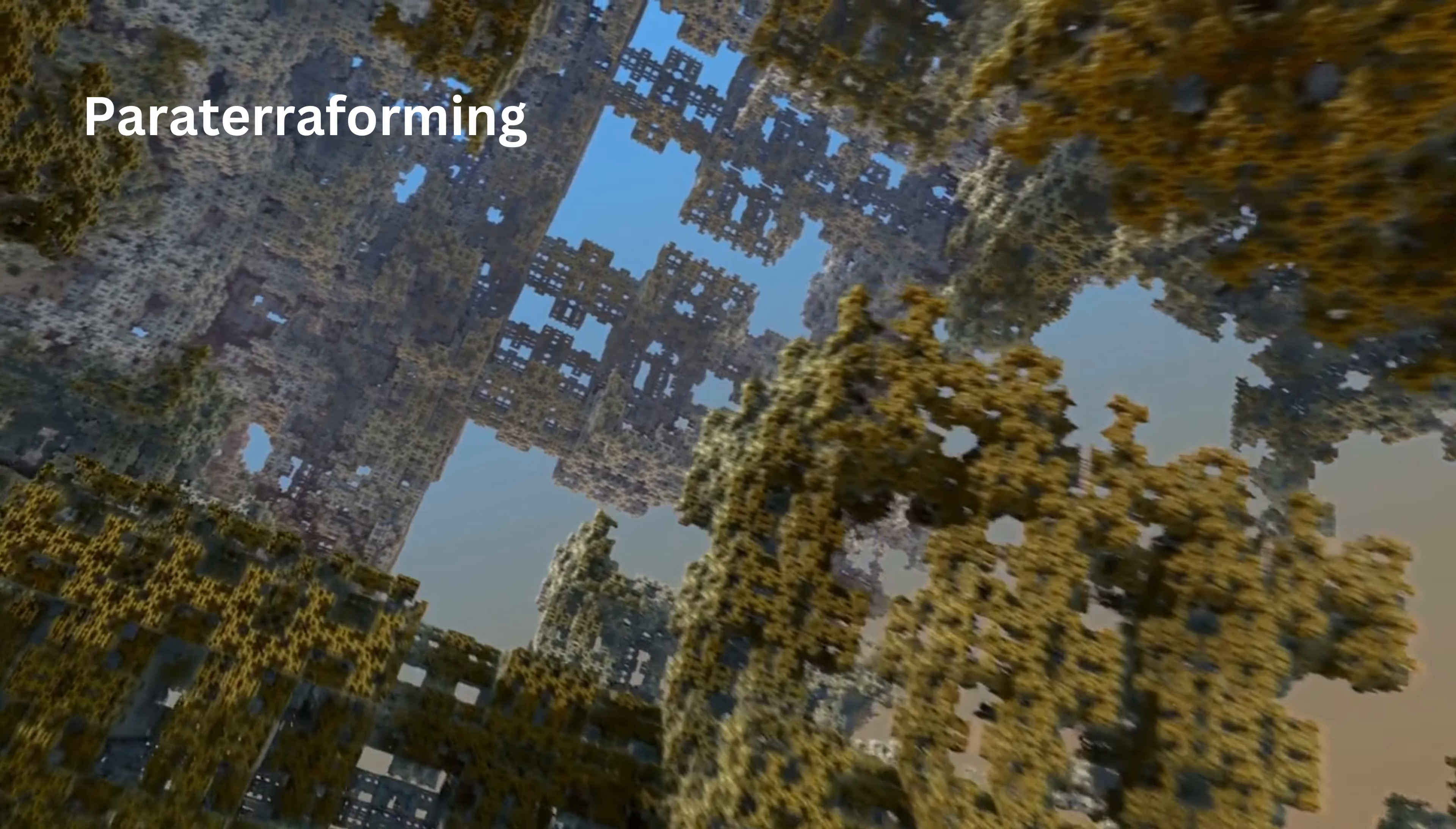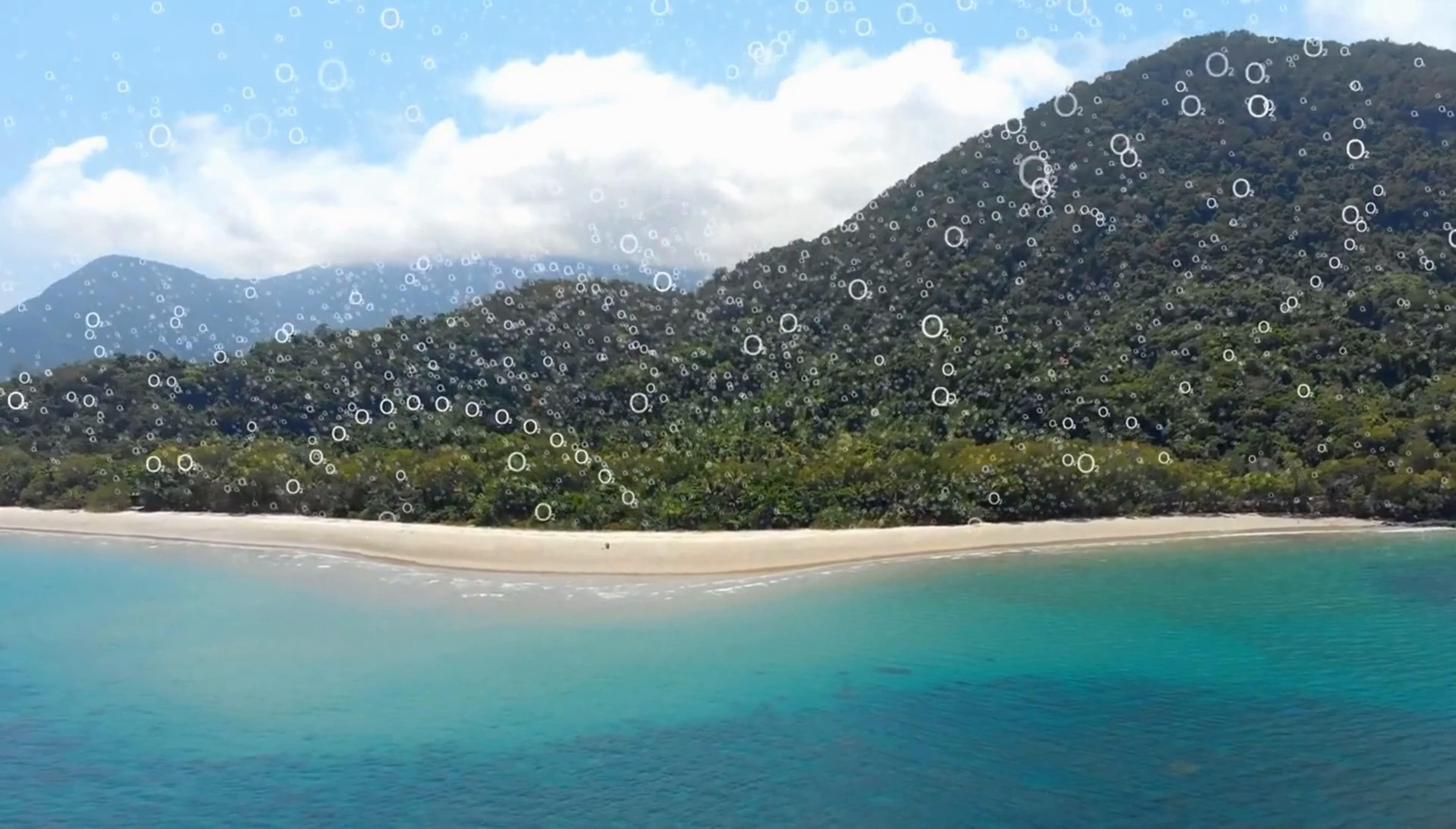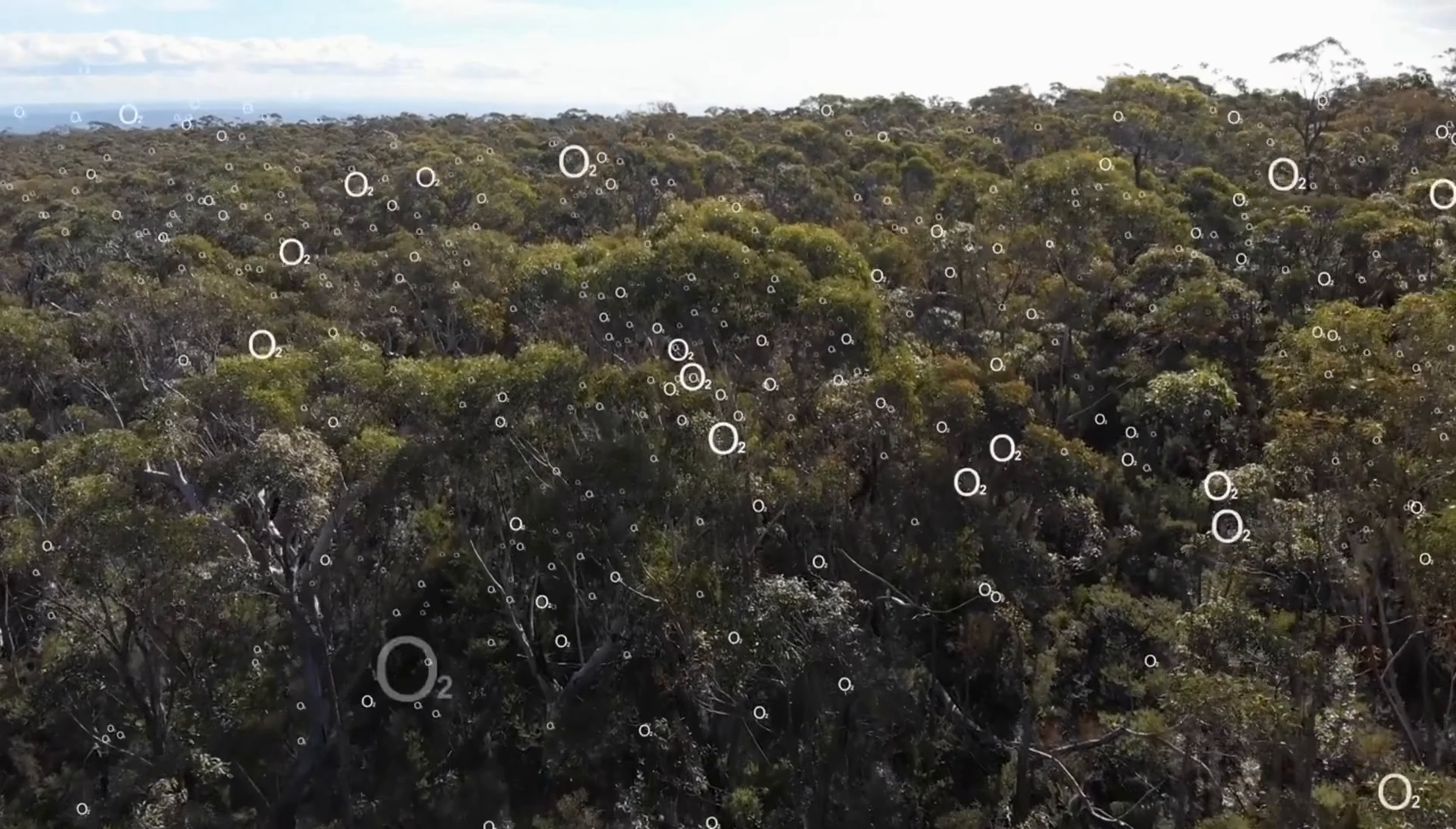Paraterraforming, also known as the world house concept, involves a habitable construction enclosure on a planet which eventually grows to encompass most of the planet's usable area. The enclosure would consist of a transparent roof held one or more kilometers above the surface, pressurized with a breathable atmosphere, and anchored with tension towers and cables at regular intervals. A world house can be constructed with technology known since the 1960s.